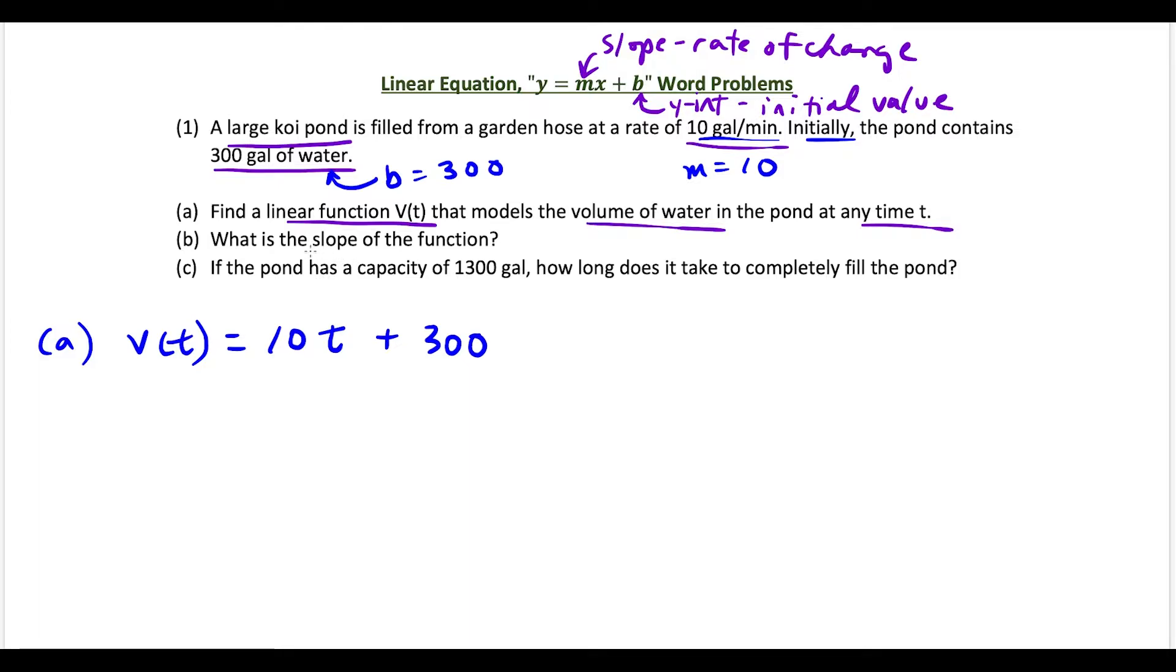For part b, we want to find the slope of the function. Our slope is just the coefficient of x, but in this case our function is in terms of t. So our slope is the coefficient of t, which is 10. If we want to write the units, the units for our slope is gallons per minute.